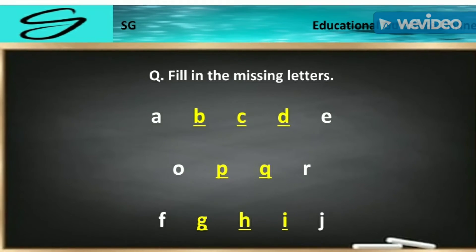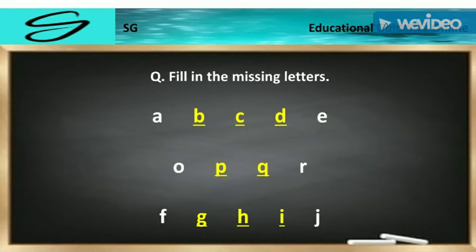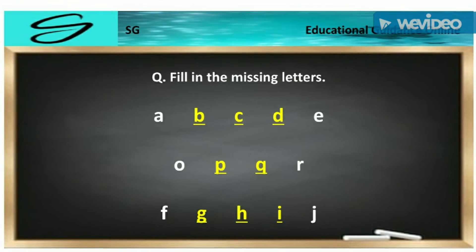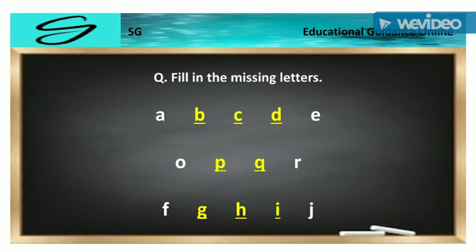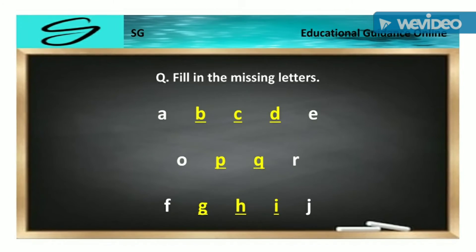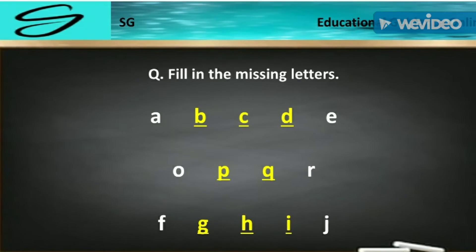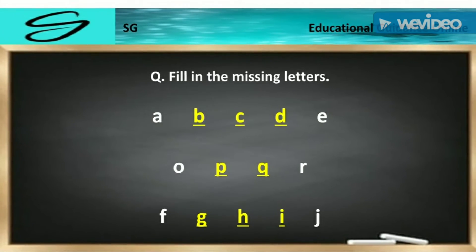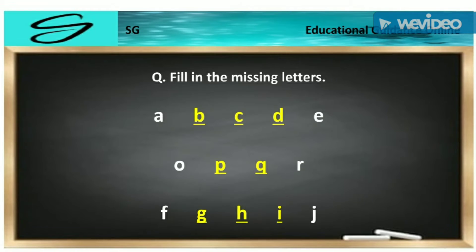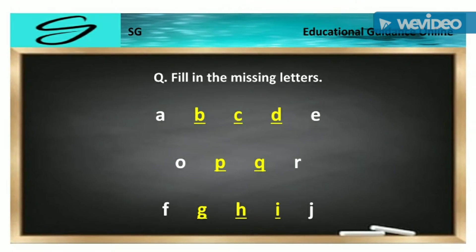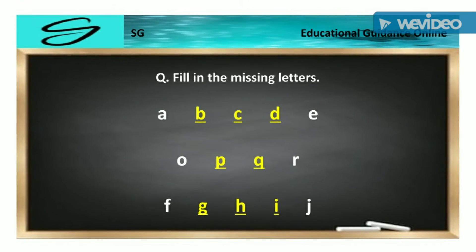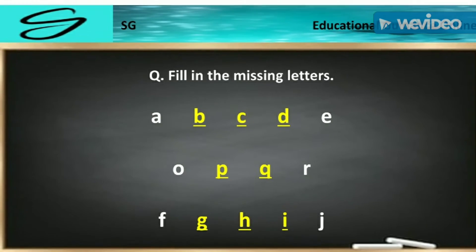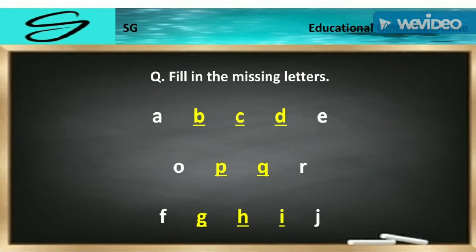Question: Fill in the missing letters. First: A, B, C, D, E. Second: O, P, Q, R. Third: F, G, H, I, J.